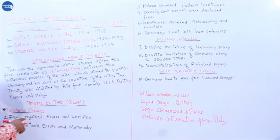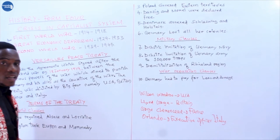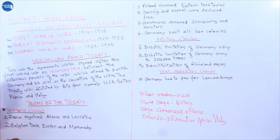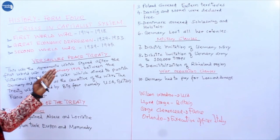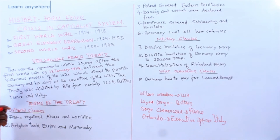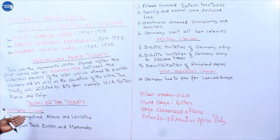On the side of the territorial clause, France regained Alsace and Lorraine. We say 'regained' because before, Alsace and Lorraine were part of France, but they were annexed by Germany during the Franco-Prussian War of 1870 to 1871. So in 1919, after the Versailles Peace Treaty, Alsace and Lorraine — being important provinces for the extraction of coal and iron — were returned to France.